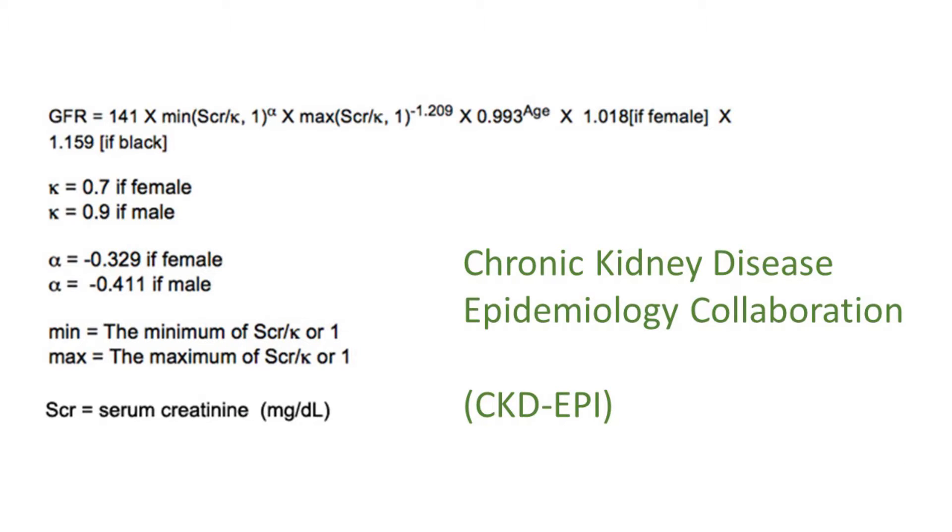Some people have recommended estimating GFR in patients with hepatorenal syndrome using an equation that includes both Cystatin and creatinine measurements. It's a variation on the equation developed by the Chronic Kidney Disease Epidemiology Collaboration and is known as the CKD-EPI-Creatinine Cystatin C equation.